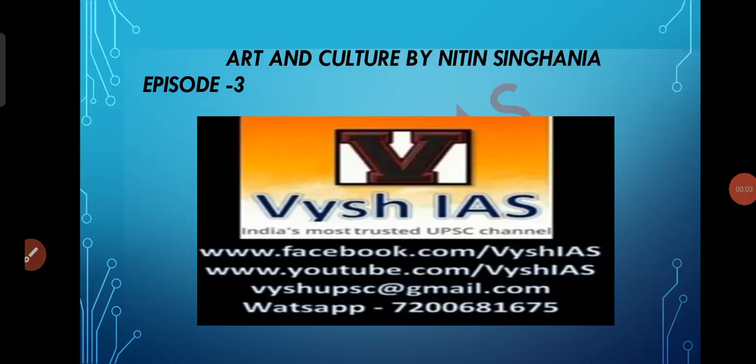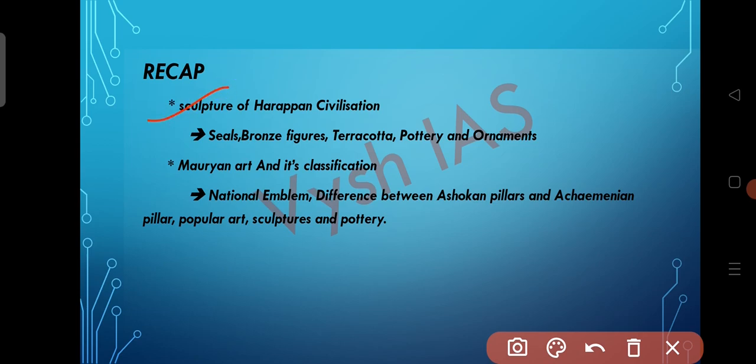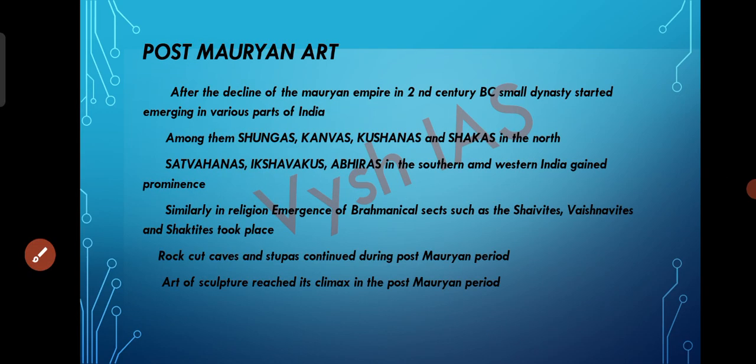Hello everyone, welcome to Vaishai's YouTube channel. This is episode number 3 of Art and Culture. In the previous video, we discussed about the sculpture of Harappan civilization — seals, bronze figures, terracotta sculptures, pottery and ornaments. We also discussed about Mauryan art and its classification into court art and popular art, as well as the national emblem, sculpture, pottery, and the difference between the Ashokan pillar and the Achaemenian pillars.